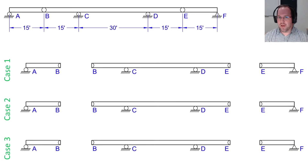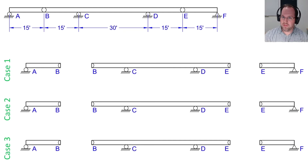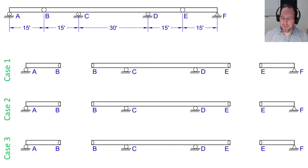To calculate an influence line, we actually have a few different methods. The first method we illustrated at the beginning of this video was just the naive approach — to march a load across the structure and do a lot of different structural analyses, finding my moment and shear at a specific location and then plotting it on a line. That is extremely tedious. So we're going to show one different method here, still using statics. And in a follow-up video, we'll have a second method, which is a geometric method called the Mueller-Breslau principle. So keep your eyes out for that one. For right now, let's focus on using statics to find an influence line.